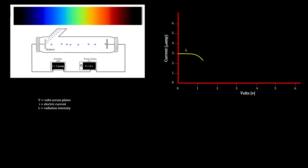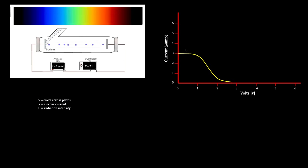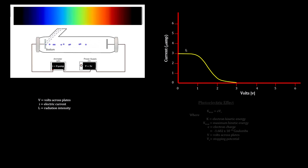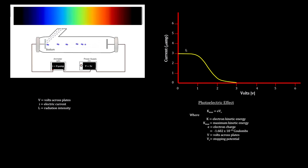As the voltage is increased, the number of electrons that can make it across goes down. At some point, the voltage is large enough so that only the most energetic electrons can make it across. Any additional increase will stop all electrons and the current will stop. This is called the stopping potential, and the energy of those most energetic electrons is the maximum kinetic energy.